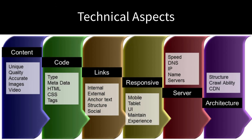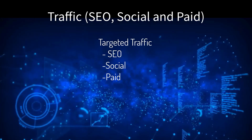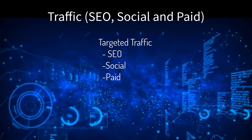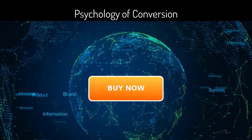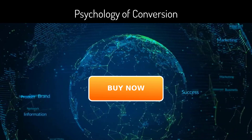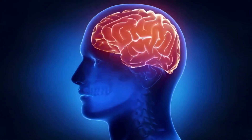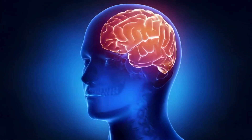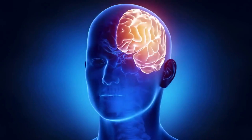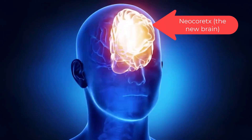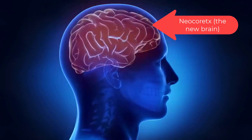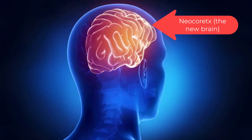All online marketing must have three elements in alignment: the technical aspects — servers, layout, code structure; the traffic — SEO, social, and paid; and the psychology of conversions. Your brain has three basic layers and only one real decision maker: the new brain, the neocortex. It thinks and processes rational data.